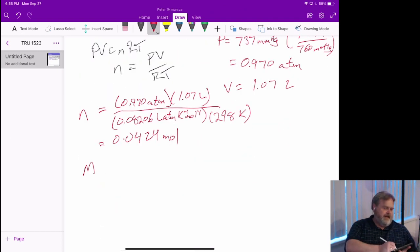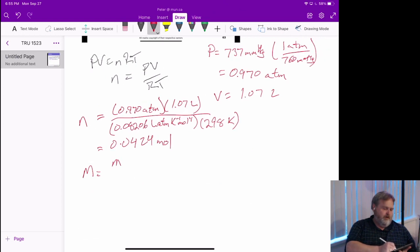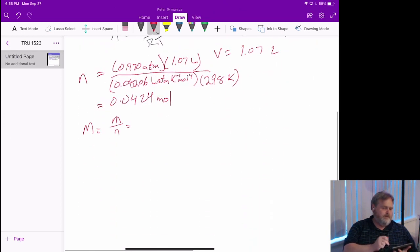Now we can calculate a molar mass. Molar mass is just a mass over moles. We saw there was a mass associated with that. It's 1.27 grams.